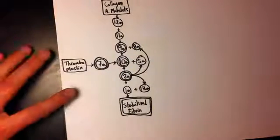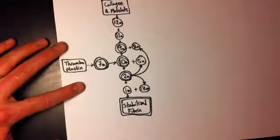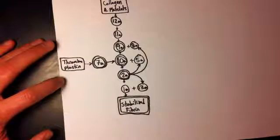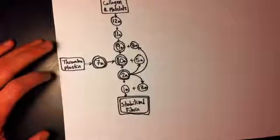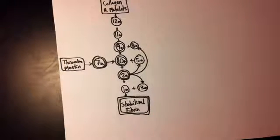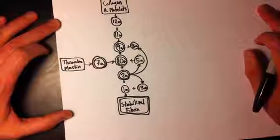These guys are all, you might recognize them, they all require vitamin K in order to be produced in the liver, in order to produce that inactive form. So 7, in order to be produced in the liver, would require vitamin K. And that's, I think that's pretty much it.